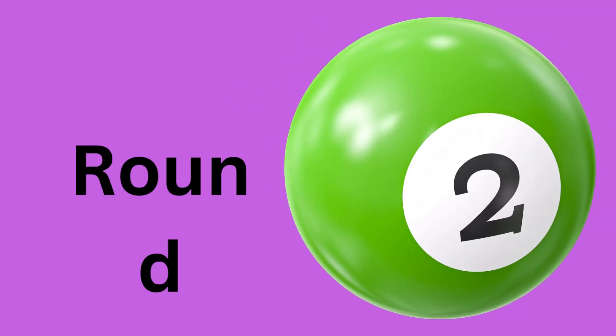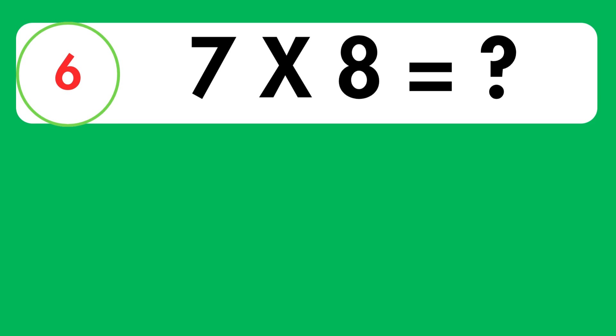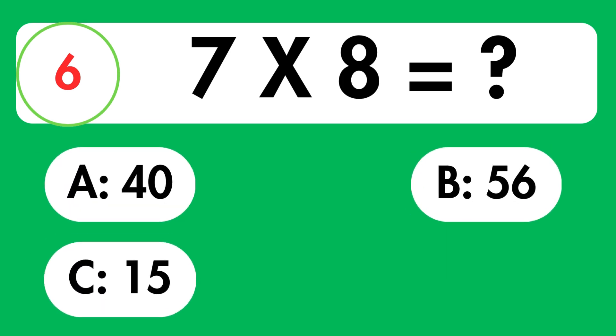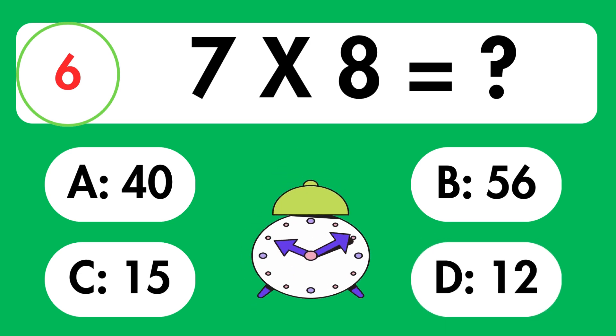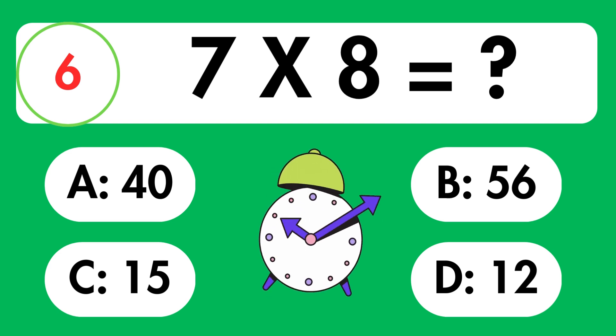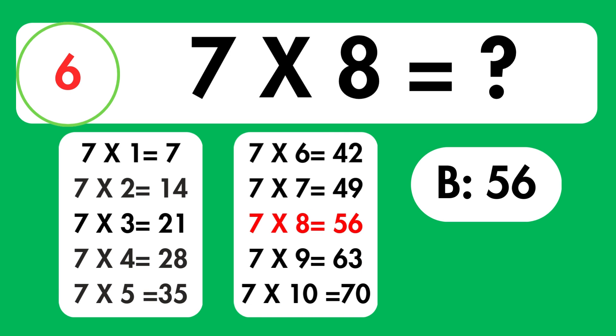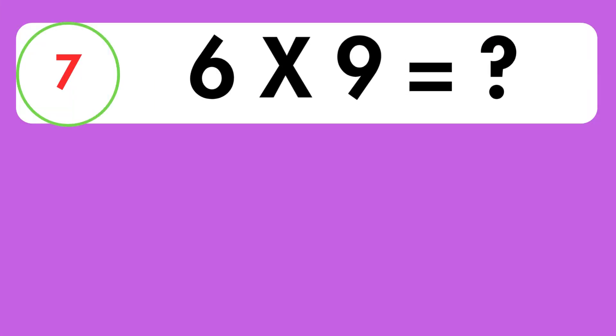Round two. Now it's time for round two, get your brain cells ready. Question 6. What is 7 times 8? Time's up. The answer is 56.